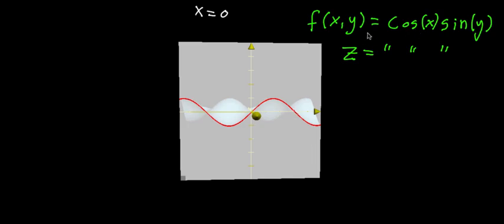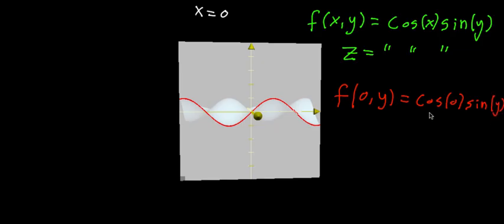And this makes sense if we start to plug things into the original form here. Because if you take f and you plug in x equals zero, but then we still let y range freely, what it means is you're looking at cosine of zero multiplied by sine of y. And what is cosine of zero? Cosine of zero evaluates to one. So this whole function should look just like sine of y.